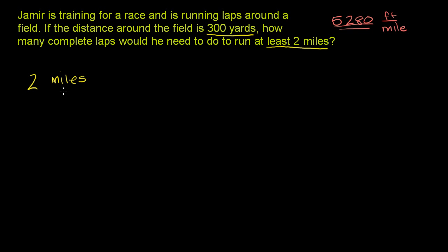5,280 feet per mile. So if we want to convert, we could first convert the miles to feet, and then since there are three feet per yard, we'll have two miles in terms of yards. So two miles — if we want it converted to feet, we put miles in the denominator and feet in the numerator, so that the miles cancel out. There are 5,280 feet per mile.